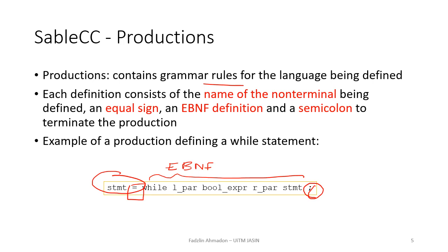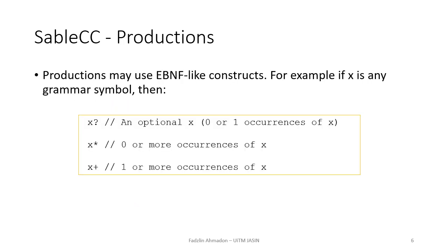An example of a production defining a while statement: a statement can be derived to while, left parenthesis, boolean expression, right parenthesis, statement, and semicolon. Productions can include extended BNF. For example, if X is any grammar symbol, X? is an optional X — it doesn't appear at all or it appears once. X* means it can not appear at all or it can appear multiple times. Meanwhile, X+ means it must appear at least once and it can appear multiple times.